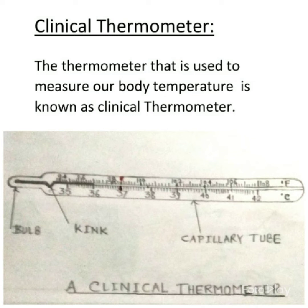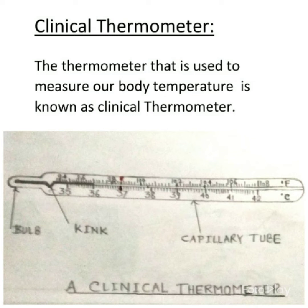Let us first see the clinical thermometer. The thermometer that is used to measure our body temperature is known as the clinical thermometer. You can see the diagram given here of the clinical thermometer. It consists of a long narrow uniform capillary tube. It has a bulb which contains mercury. Outside the tube, a small shining thread of mercury can be seen. If you do not see the mercury thread, you can rotate the thermometer to see it. The capillary tube has a small bend in it, and this bend is known as a kink.